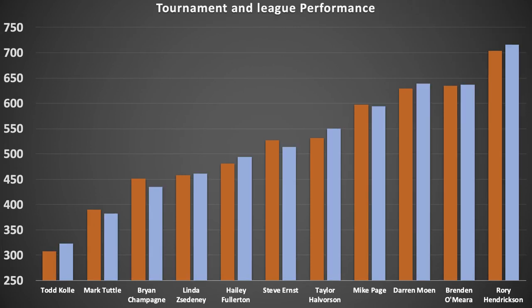The bars on the right for each player are the performance ratings computed considering only league games. In computing these league performance ratings, the computer knows nothing about these players having ever played in a tournament. These modest differences in ratings between tournament and league are within expected statistical variation. So it's pretty clear that you get a pretty good picture of how these players perform relative to one another — either just looking at tournament data or just looking at league data. In fact, you get the best picture looking at all the data together.